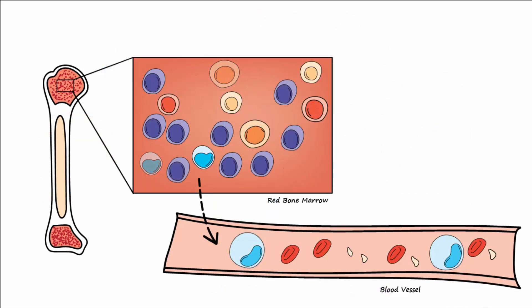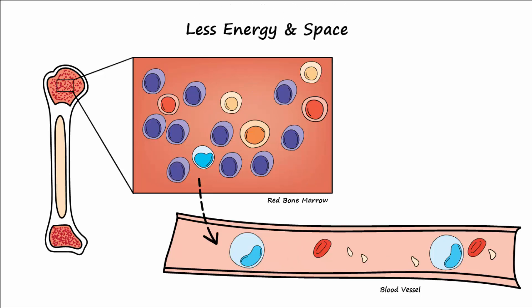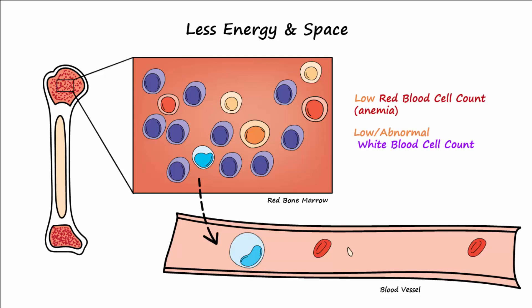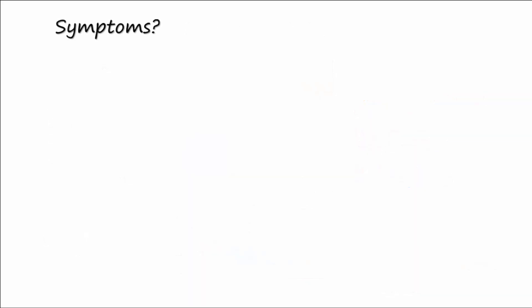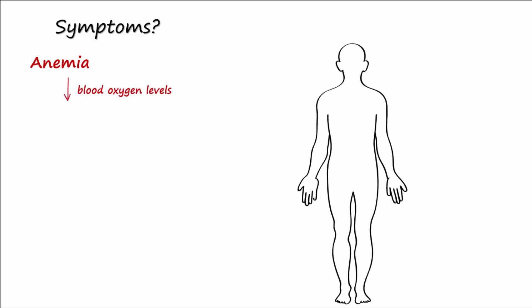With at least one type of blast cell proliferating in the bone marrow, there is less energy and space available for the production of erythrocytes, leukocytes, and platelets. This is why both types of acute leukemia can manifest with low red blood cell counts, low or abnormal white blood cell counts, and low platelet counts. With fewer erythrocytes — or anemia — one would expect symptoms resulting from decreased blood oxygen levels, like mental fatigue.